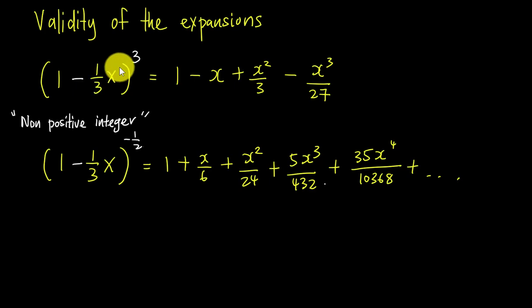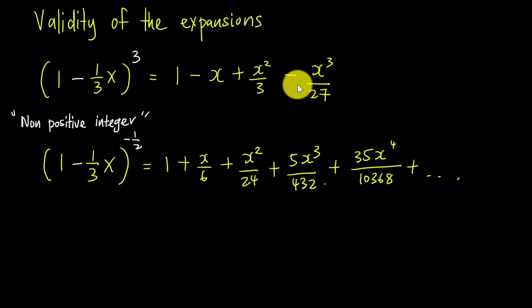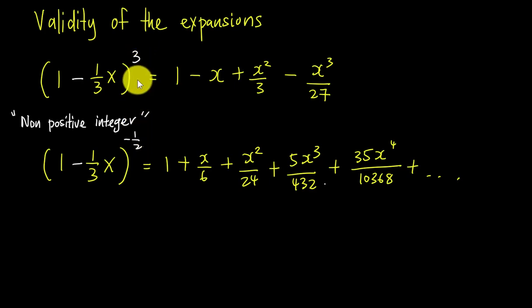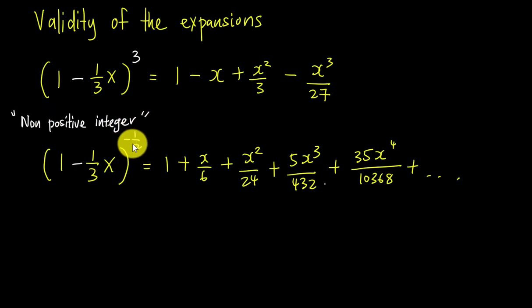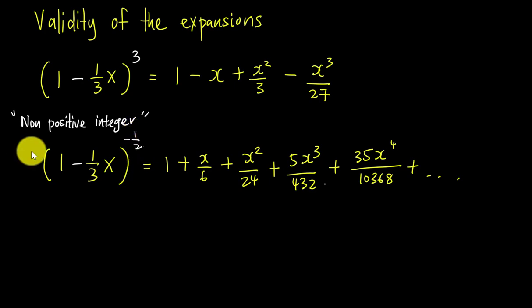Whatever x value you have in the bracket, you have the same x value in the expansion. But when the power becomes a non-positive integer — meaning not a positive integer, so it can be a negative integer or any fraction — like negative 1/2, or 1/2, or negative 2, negative 3, or any fraction like 3/5 — then we will need to find the validity for the expansion.